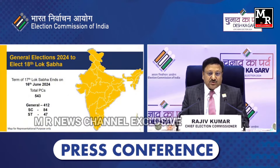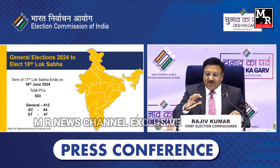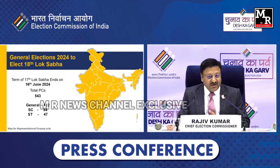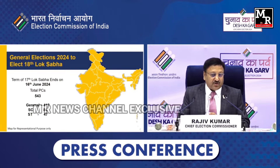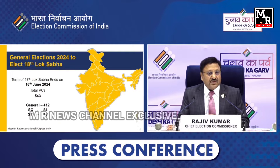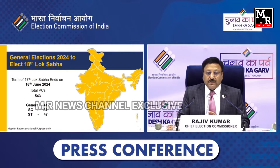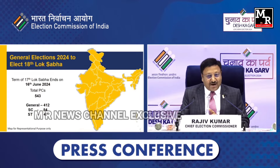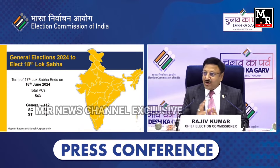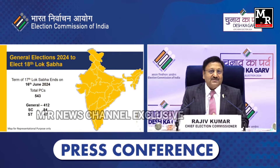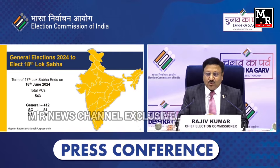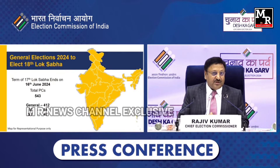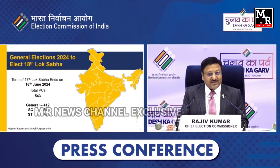Coming to the general elections to the Lok Sabha — the world's biggest democratic exercise. 543 parliamentary constituencies, of which 84 are reserved for SCs and 47 are reserved for STs. Before announcing the schedule for these 543 constituencies, I once again earnestly appeal and request all voters: please come out for voting. Come on the day of voting. Do not go on holiday — please come and vote.